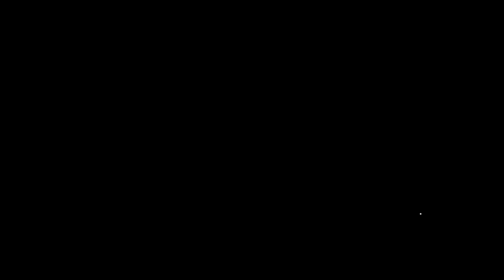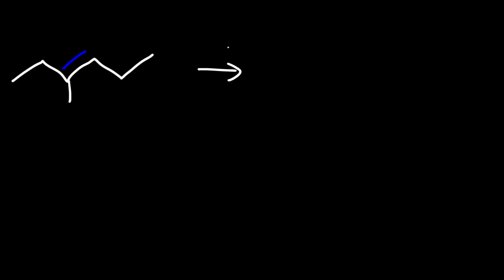Now let's try some more examples. What if we had a very similar structure but there's an extra carbon there? What's going to happen? We'll use ozone again. Instead of dimethyl sulfide, you can use zinc and acetic acid — it will have the same effect.